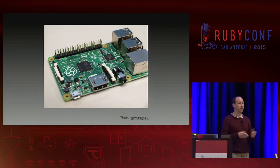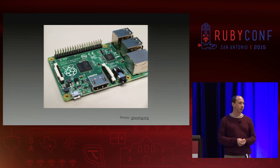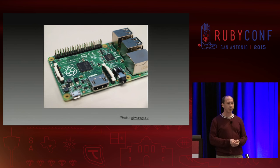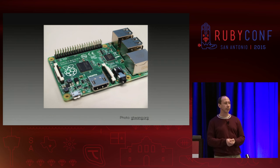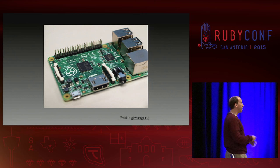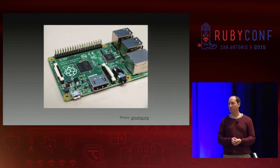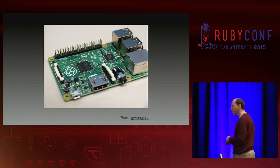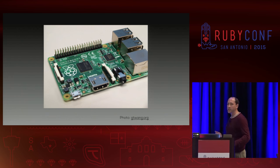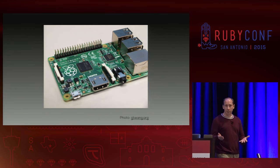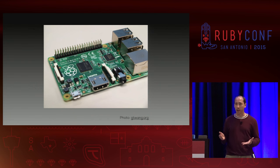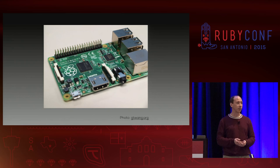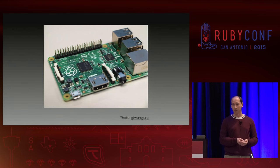Sonic Pi was written in Ruby, naturally. The language it uses for creating music is a very elegant and approachable Ruby DSL — or really just straight-up Ruby with a really nice API. Sam collaborated with a school teacher in the UK to develop a curriculum for bringing Sonic Pi into primary schools and teach 10-year-old kids the basics of coding.